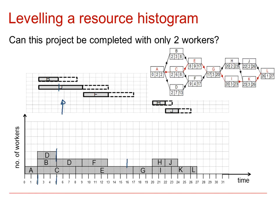What will happen is that F will now come into this new position, and D starting at 5 and having a duration of 7 will finish at time 12. So we've now literally levelled the resources so that D is no longer in its original position, but by starting 3 hours later we only require a maximum of 2 workers for the whole project. That was possible because D and F could both move within their float times.